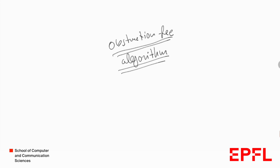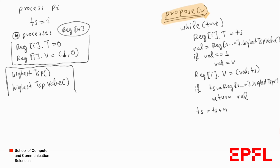Here we can see the obstruction-free consensus algorithm presented in class. Each process maintains a timestamp TS initialized to i, where i is the identifier of this process, and all n processes share an array of registers reg_n. Each element of this array contains two registers: one that stores the timestamp (denoted capital T), and one that stores a value-timestamp pair. Initially it's bar-zero, and the timestamp in this array is always zero for every process.